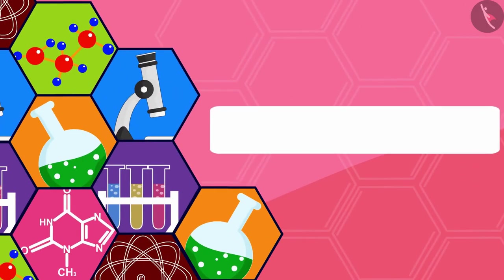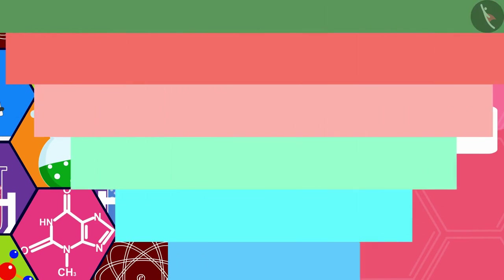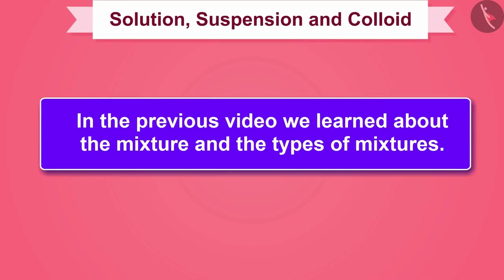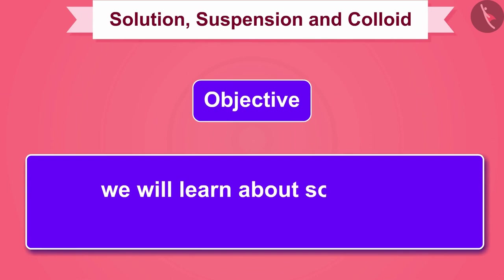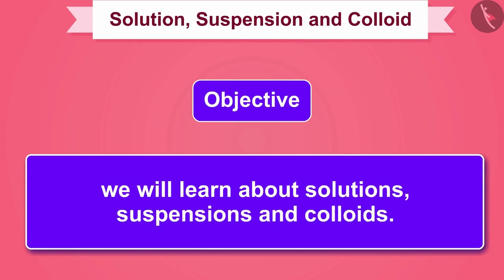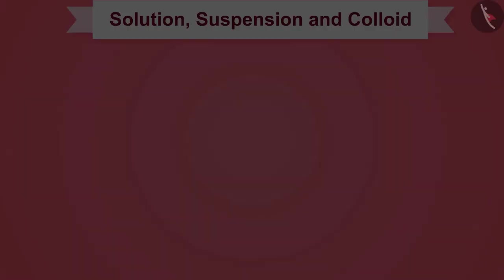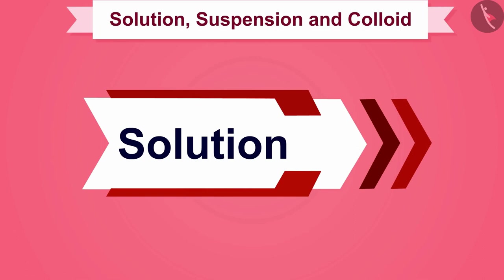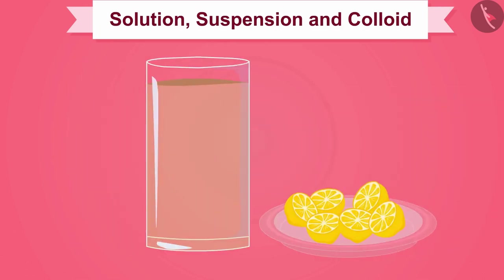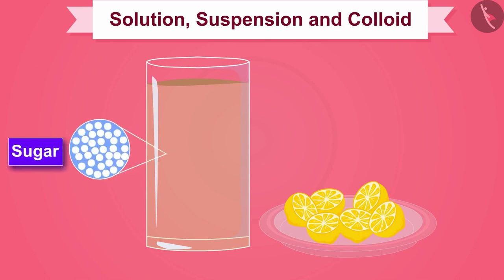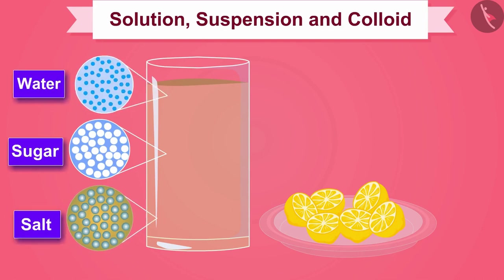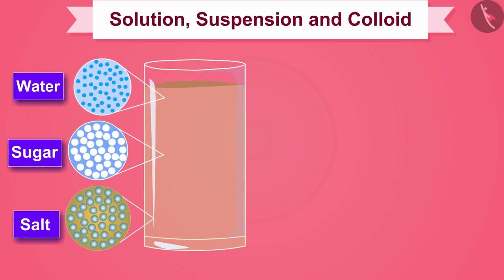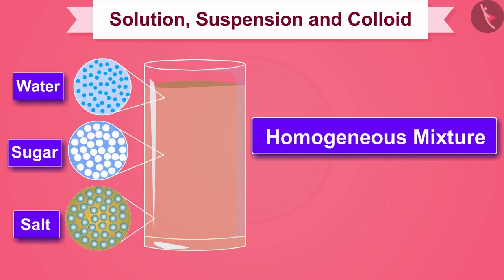Welcome to this video. In the previous video we learned about the mixture and the types of mixtures. In this video we will learn about solutions, suspensions, and colloids. Let us first know what is a solution. Do you like to drink lemon water? Lemon water is an example of a solution that consists of sugar and salt particles and water particles. Because it has the same texture, it is a homogeneous mixture.